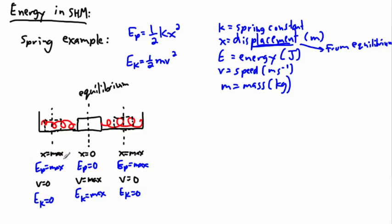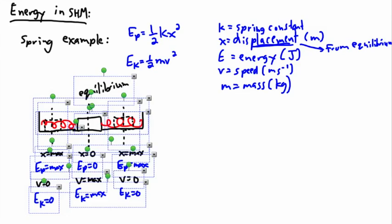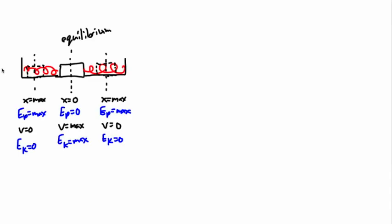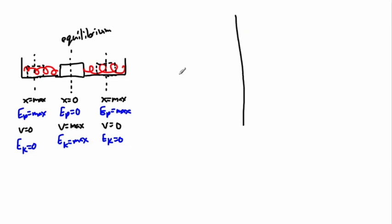Let's now look at a graph. I'm going to do a graph of energy versus position, and on another page a graph of energy versus time — these will give us different graphs. So here the axes are energy in joules versus displacement in meters. On the next page, it will be energy versus time.